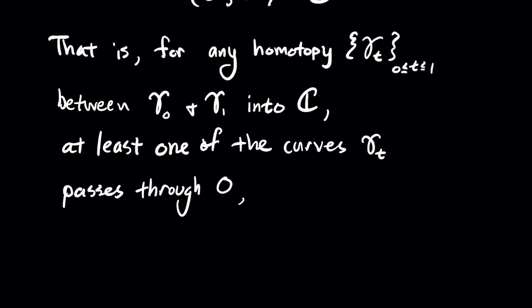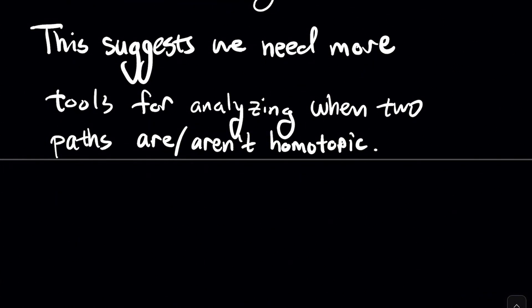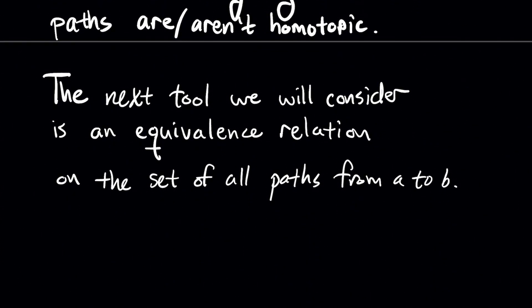And again, just to recap, the idea would be to try to show that for any homotopy gamma t between gamma naught and gamma one that goes into C, at least one of those curves has to pass through zero. So there's no such homotopy into the complex numbers minus the origin, right? You have to have the origin in order for those two curves to be homotopic. And so this suggests that we need some more tools for analyzing when two paths are or aren't homotopic to each other. And the next tool that we're going to consider in a future video is an equivalence relation on the set of all paths between a and b.